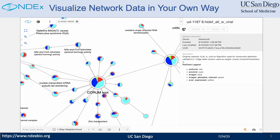Here is an example of an NDEX network. A user can set up sophisticated rule-based visualization styles on many of the visual properties on a network, like node size, node border color, edge color, edge arrow shape, etc. On the right-hand side is the metadata panel, which displays the metadata of a network, like title, description, owner, creation, and modification time, etc.